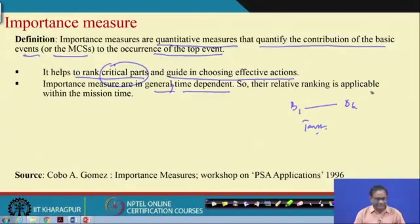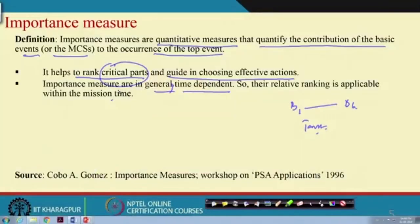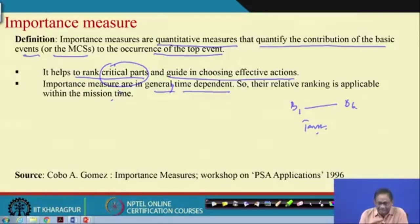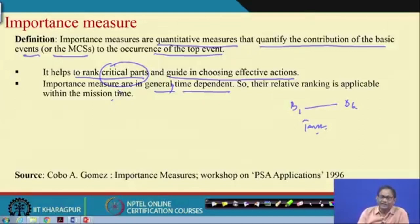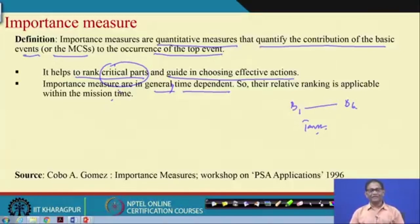The relative ranking is applicable within the mission time. It may happen that within the set time a component will fail. In this particular example we have a set time — the pump time — within which it may fail. That can be called the mission time. There may be situations when you do not preset the time; you continue working and the components are under continuous operation. Then the probability of failure of those components depends on the time of use, and we must clearly mention the mission time.